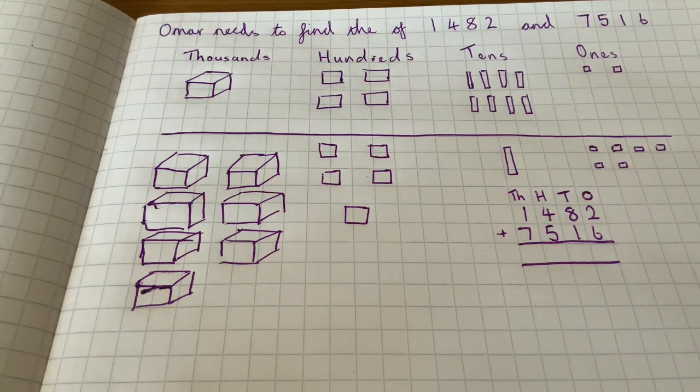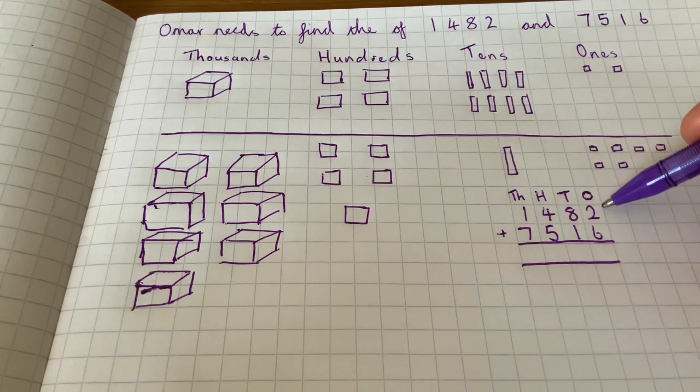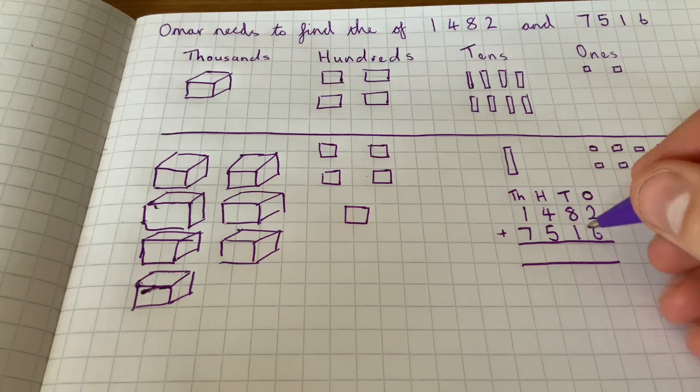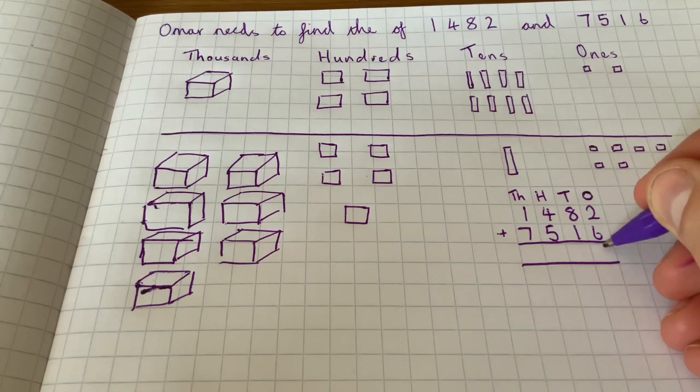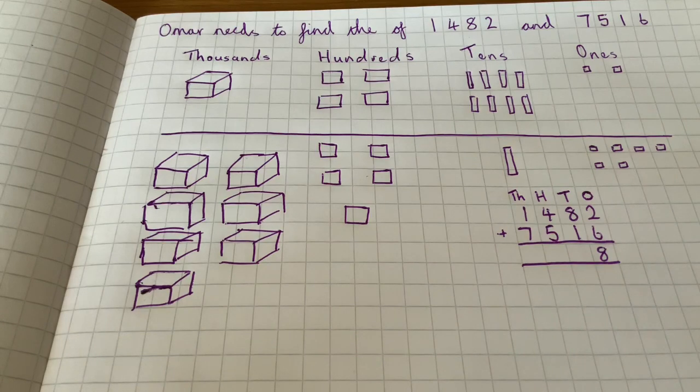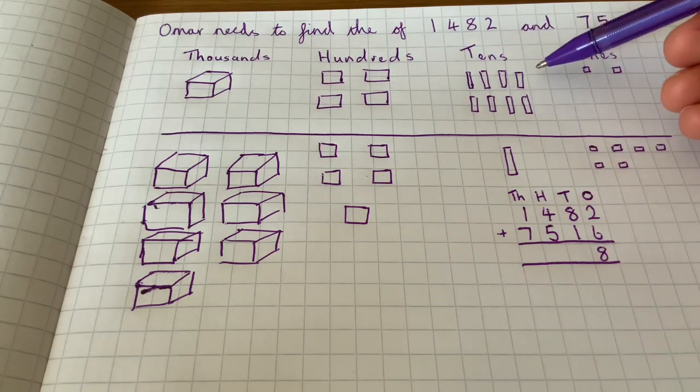So using this method, we always start with the ones, so we add the ones together. So we do two add six. We can always add them all together, we draw them out, it's up to you. But two add six ones equals eight ones.